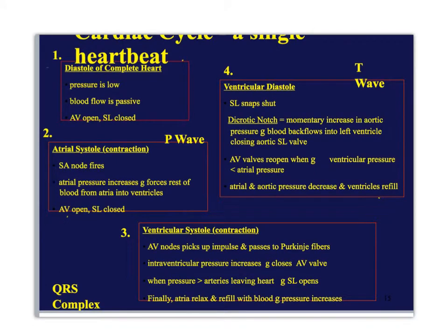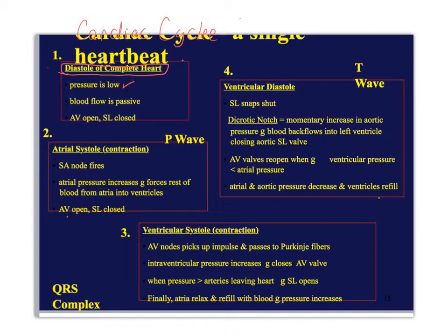You need to put together all the components of the cardiac cycle. Whether it's a flow chart, written out, or diagrams — you need to understand it. During the pause when your heart is relaxing, we call this diastole of the entire heart — the relaxation of the entire heart. Pressure is going to be low, blood is moving passively. You've got passive filling of the atria and passive filling of the ventricles. The AV valves need to be open, and they are, and the semilunar valves are closed.